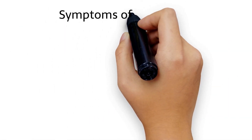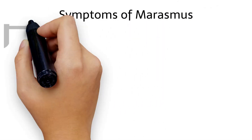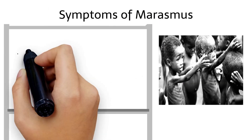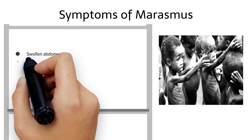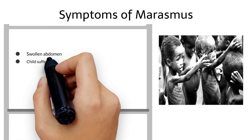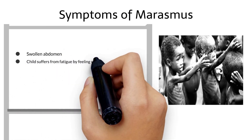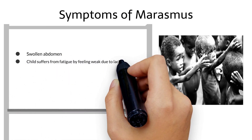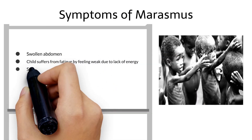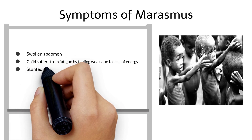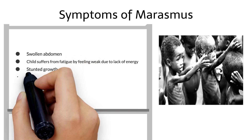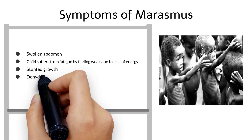Symptoms of Marasmus: swollen abdomen; the child suffers from fatigue, feeling weak due to lack of energy; stunted growth; and dehydration.